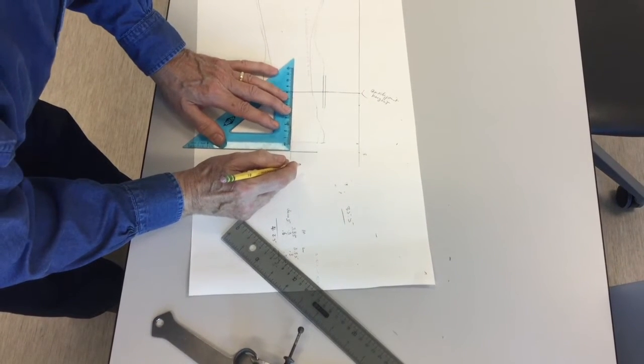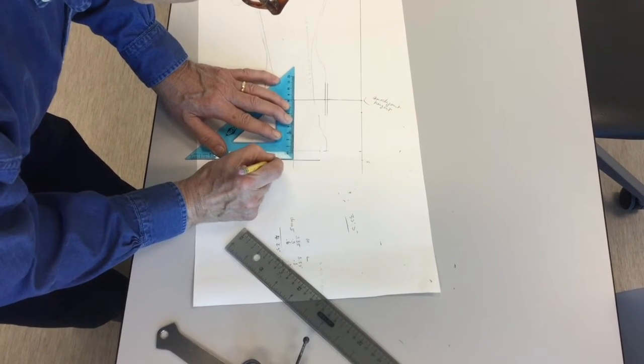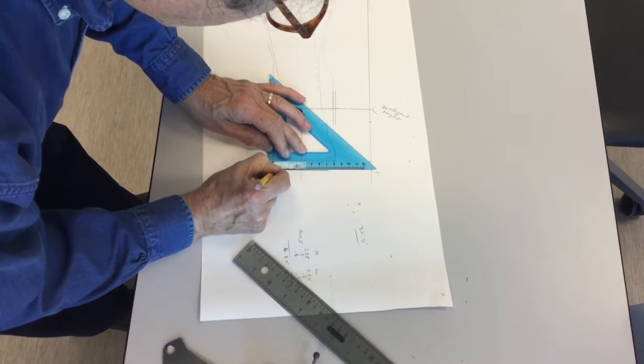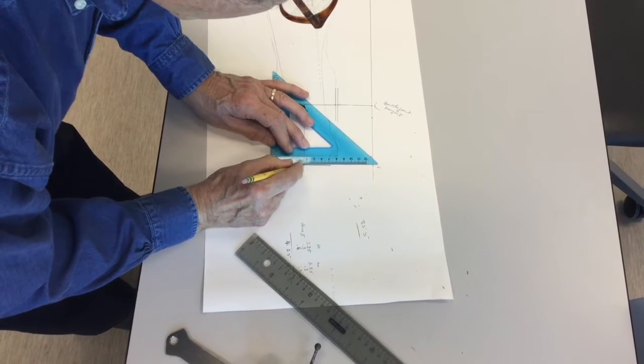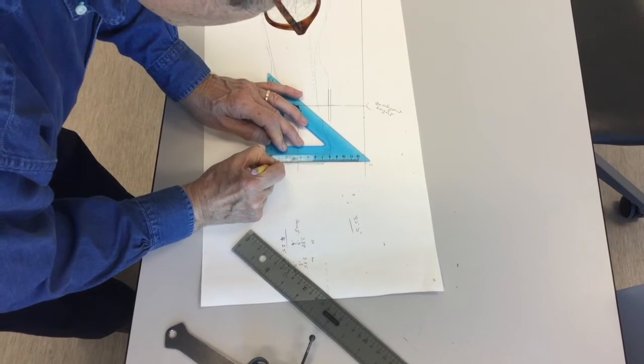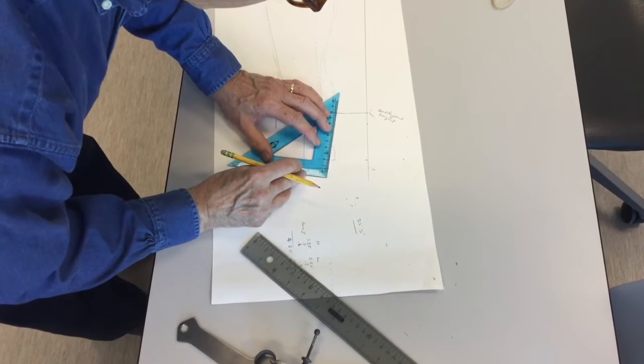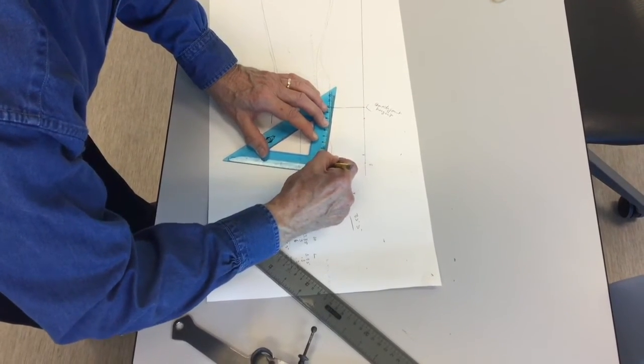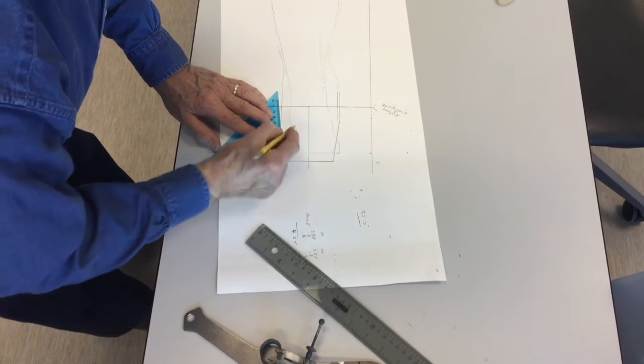So everything is perpendicular to the mid-sagittal line? Mm-hmm. That's the idea. Now we connect them. Everything is either perpendicular to the mid-sagittal line or it's parallel to those four. Except for those two.